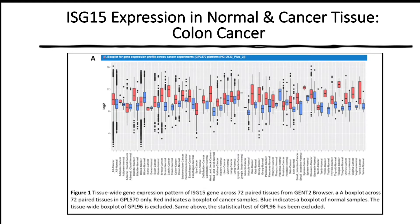These figures were taken from the GENT2 browser, which stands for gene expression in normal and tumor tissue. In the figure on the left, red is representative of cancer samples and blue is representative of normal samples, with the first two bars in the box plot indicating all cancer and all normal tissue. The general trend is that ISG15 gene expression is upregulated in cancer compared to adjacent normal tissue.